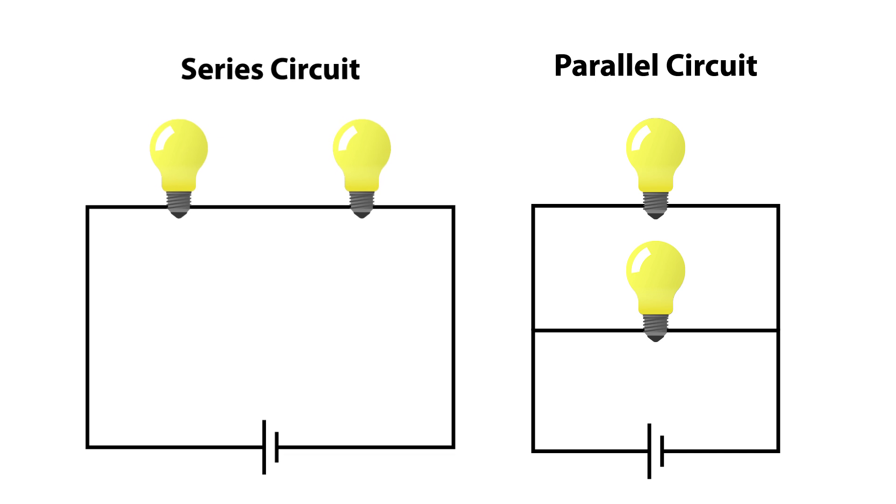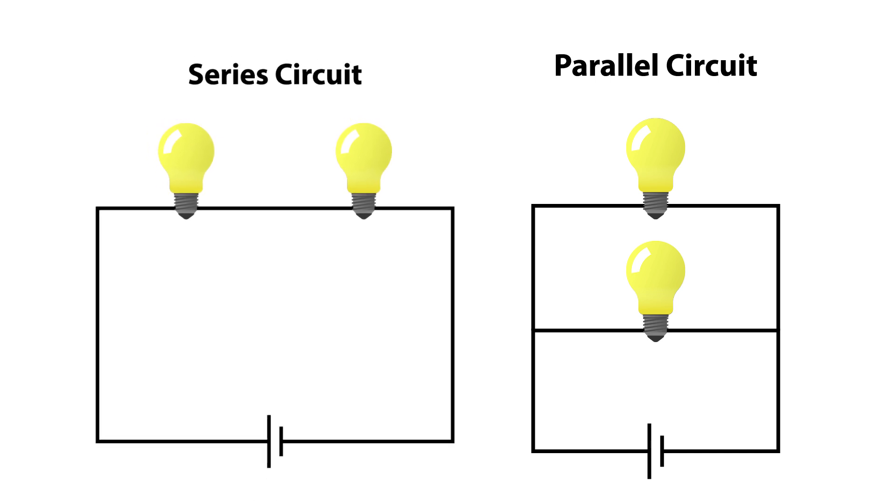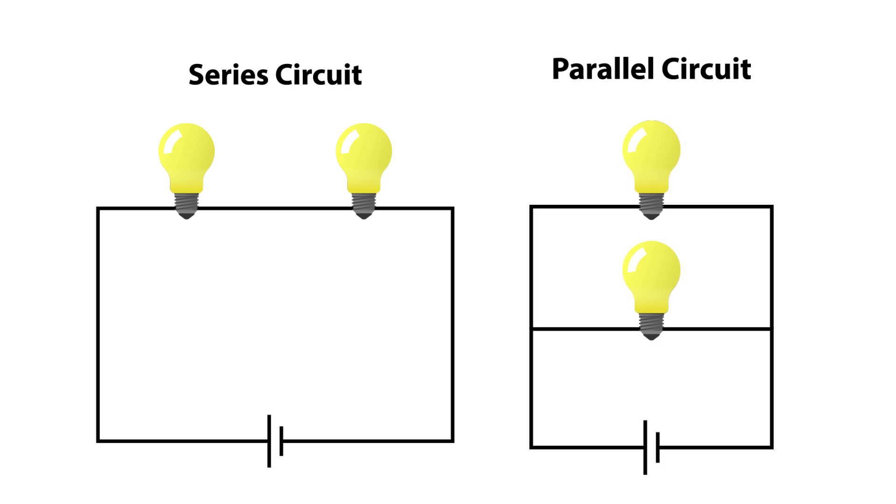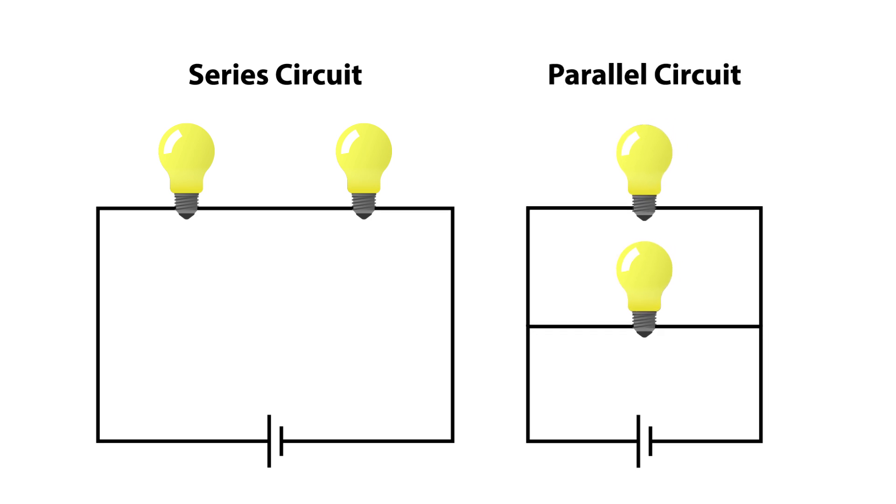In a series circuit all components are connected in such a way that there is only one path through which the charge can flow. In a parallel circuit there are multiple paths through which the charge can flow.